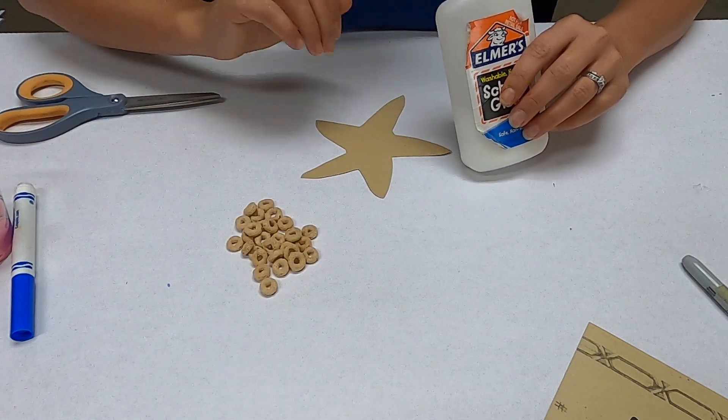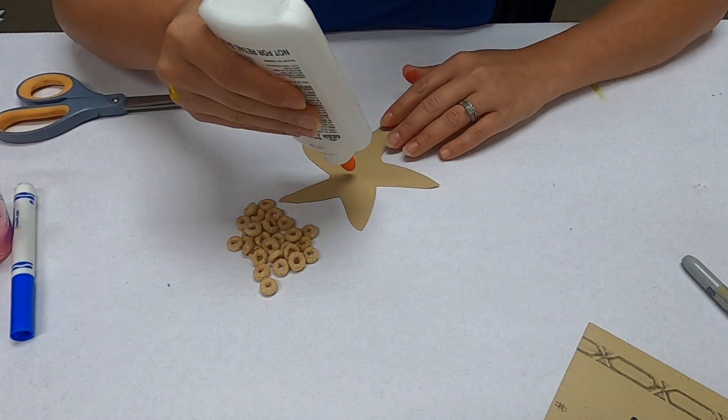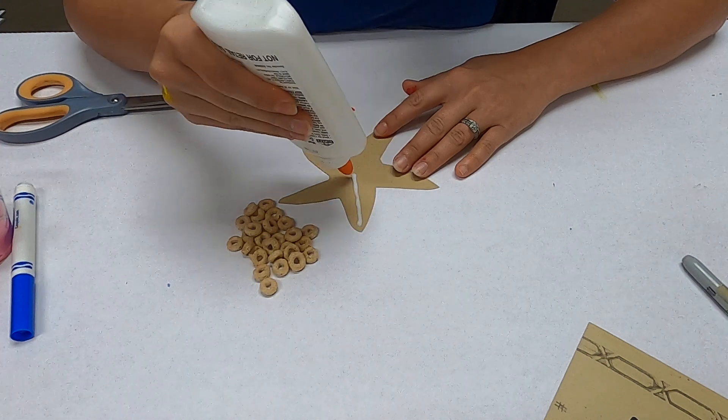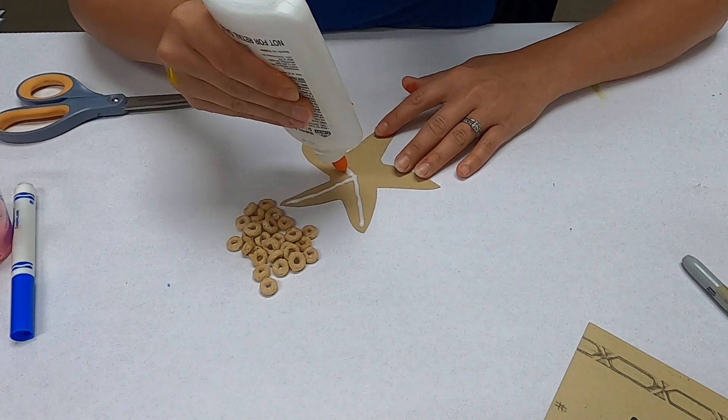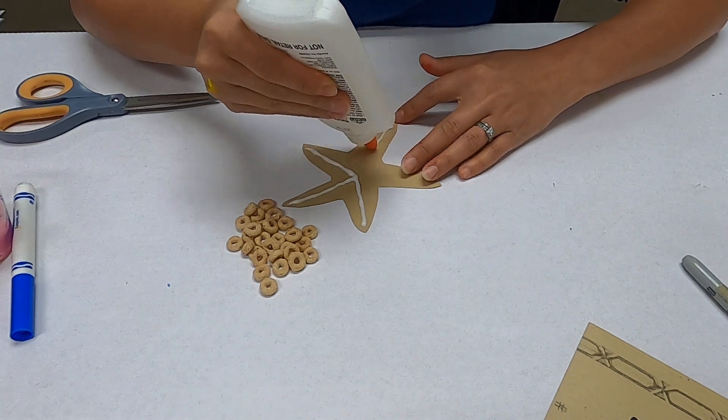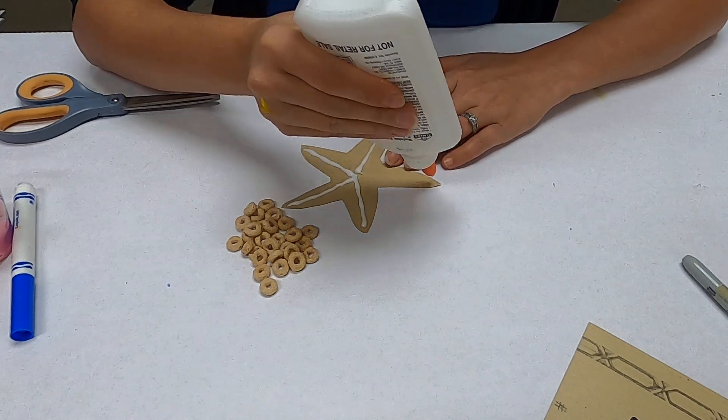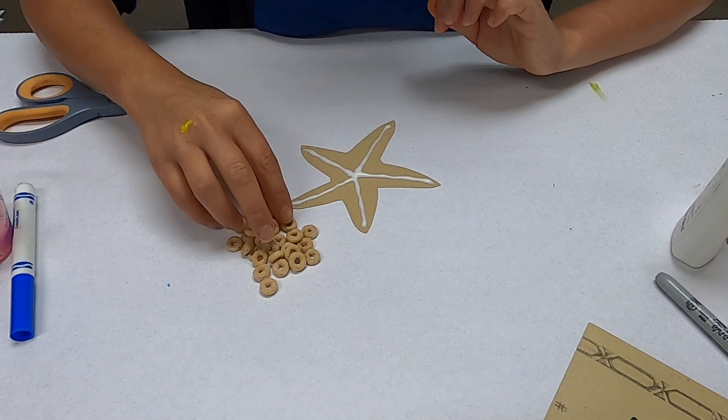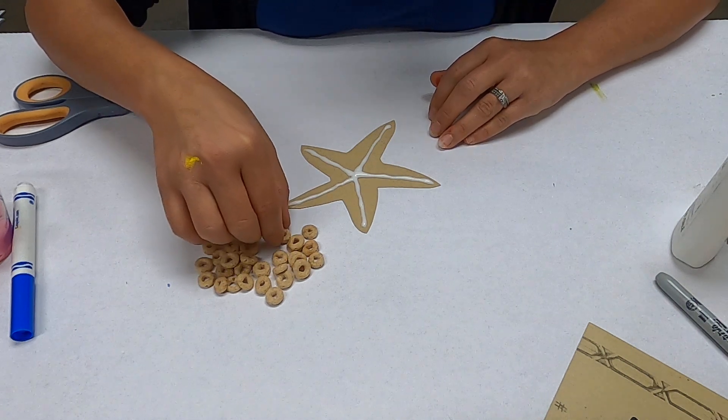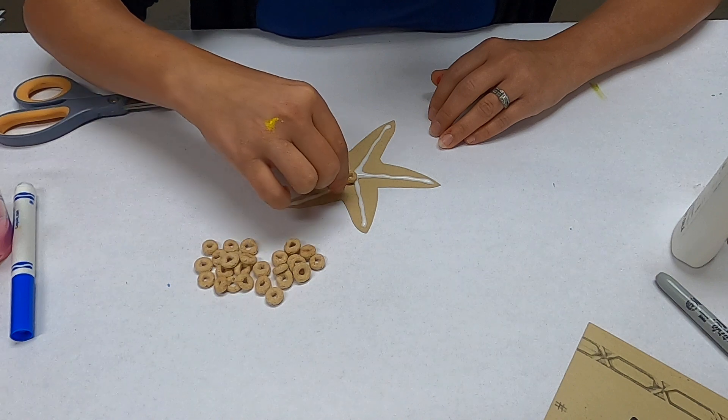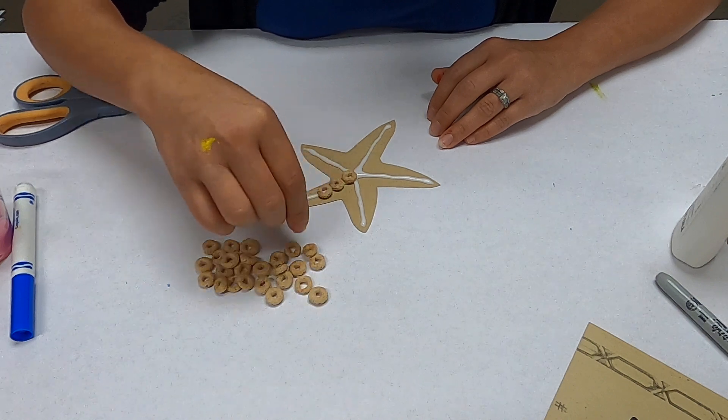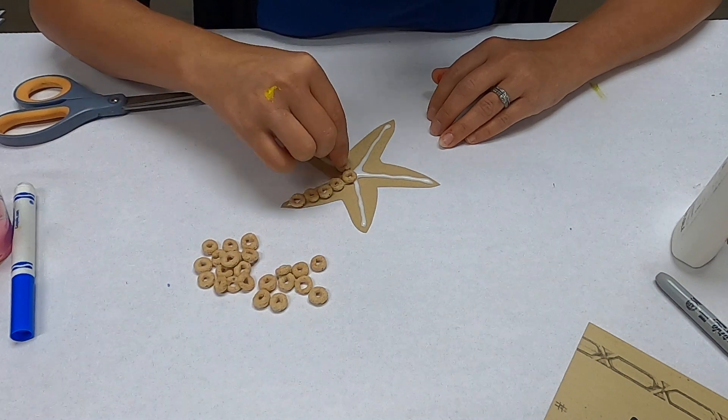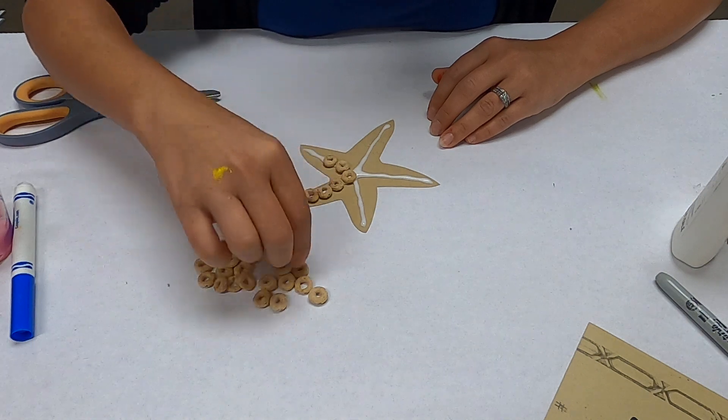In order to do this one, we want to start with our glue in the middle and I'm going to draw a line all the way out through the arms. You might want to just do this one arm at a time if you're afraid of the glue drying, depending on how quickly you can do it. Then we take our Cheerios and one by one we're going to put them on the line of glue.